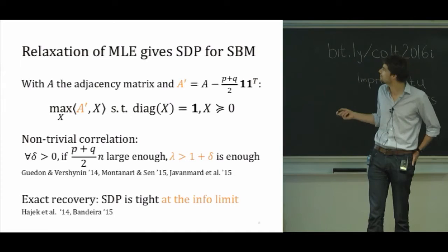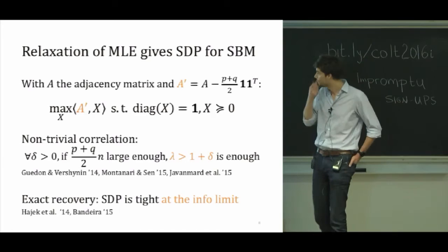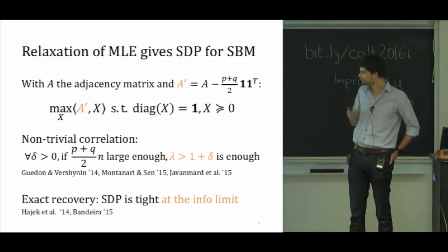And for the other regime, the situation is even nicer. If you solve the SDP, then with high probability in the dense regime, the solution of the SDP is actually going to be a rank 1 matrix that tells you exactly where the partition should be. Can you say large enough, even though delta? No, so if you pick a delta, large enough depends on delta. So if you want to make delta small, you need this to be bigger.